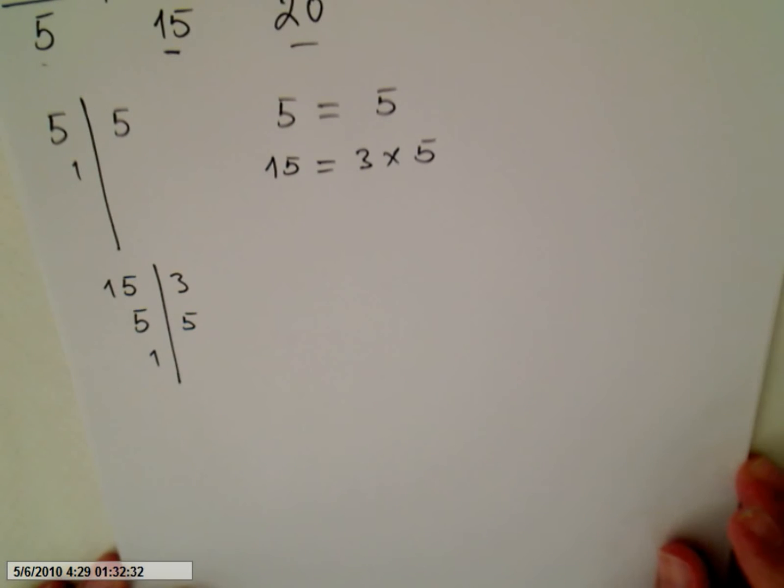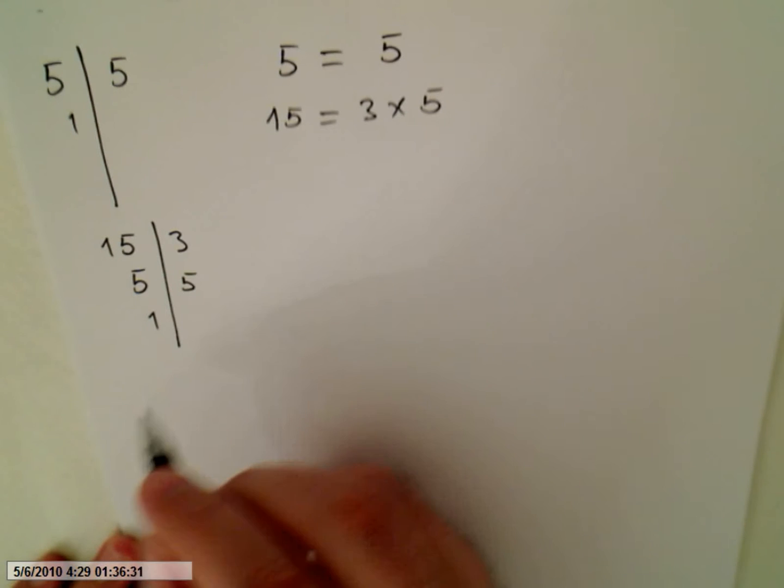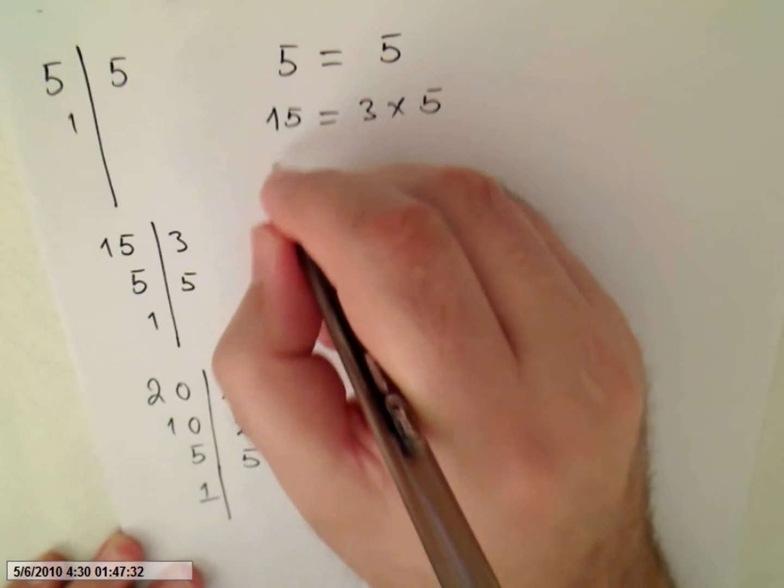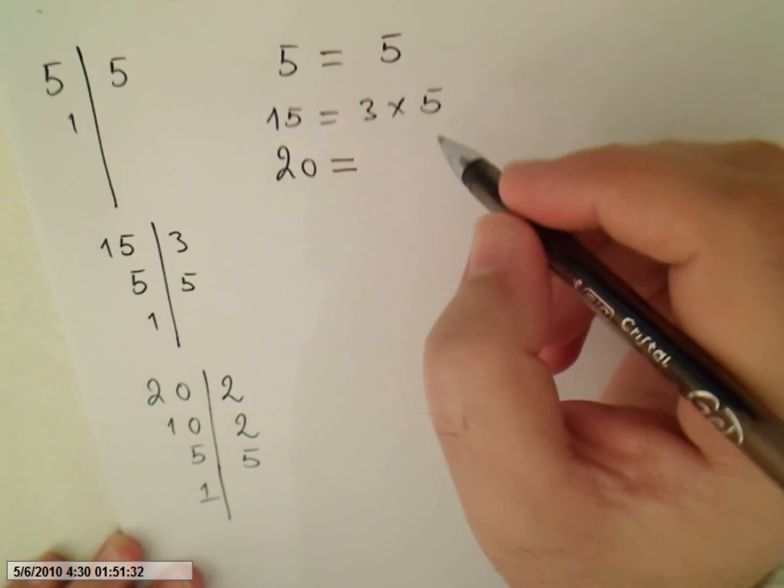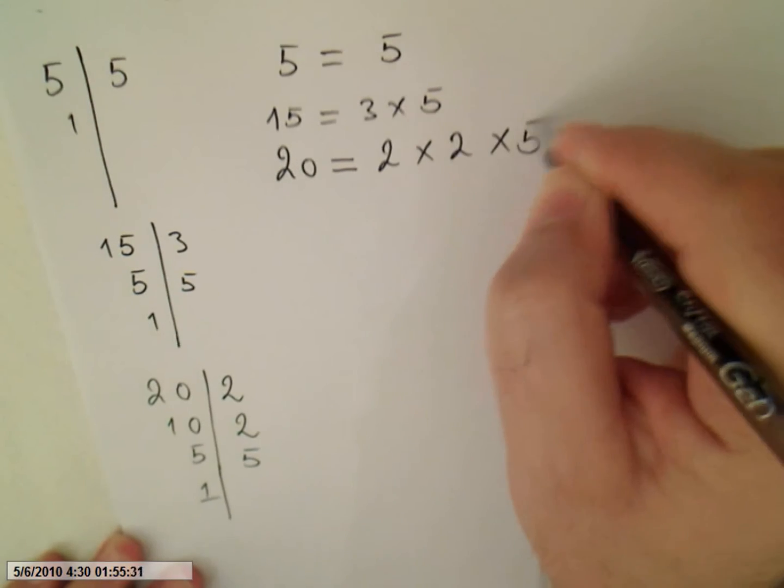Okay, let's factorize now 20. 20 divides 2, we get 10. Divide 2, we get 5. Divide 5, we get 1. So 20 will be 2 times 2 times 5.